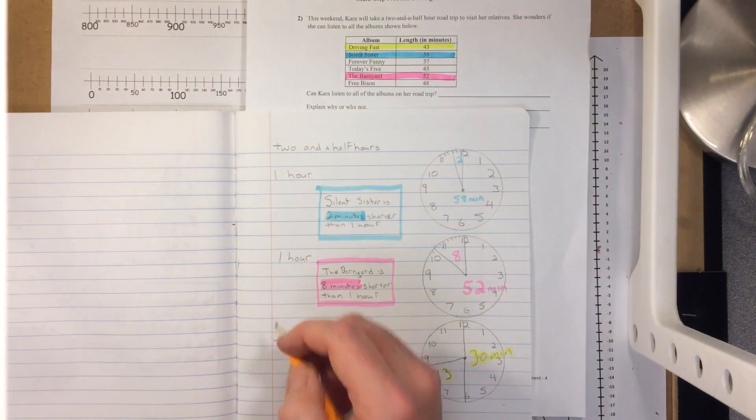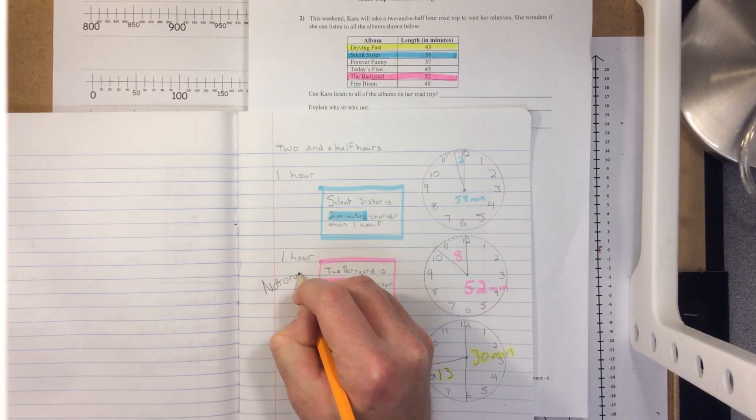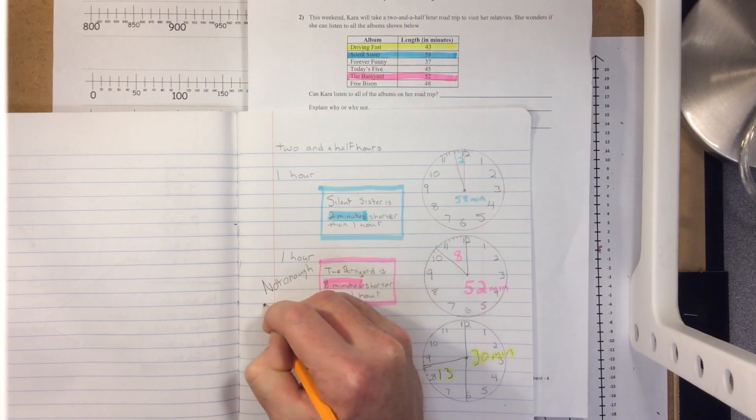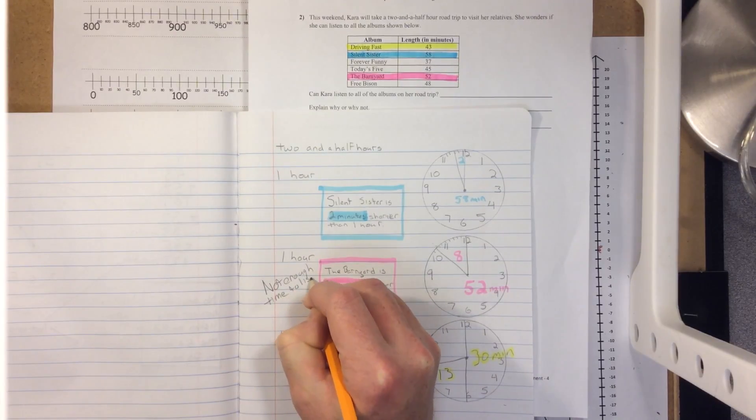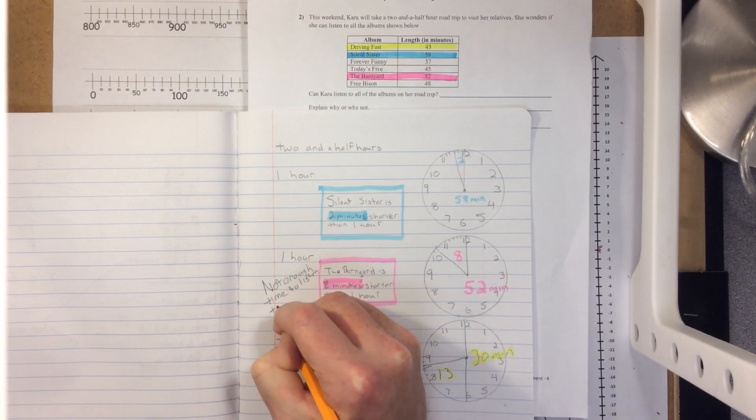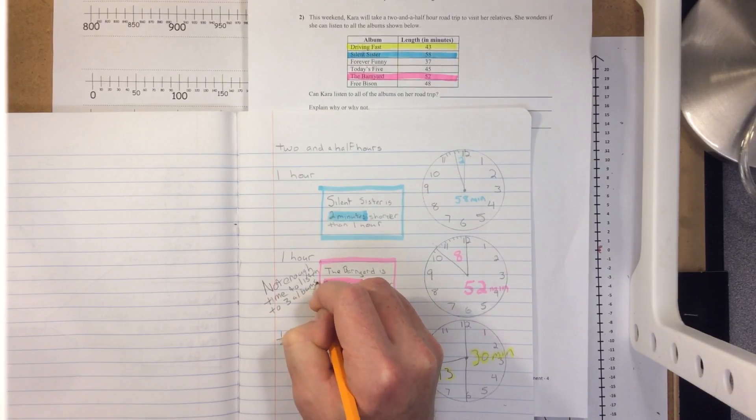So now, the first album Silent Sister is two minutes shorter. The second album The Barnyard is eight minutes shorter. So that's 10 minutes shorter altogether. Just by adding Driving Fast, it's 13 minutes longer. So this means that just these three albums are longer than two and a half hours.